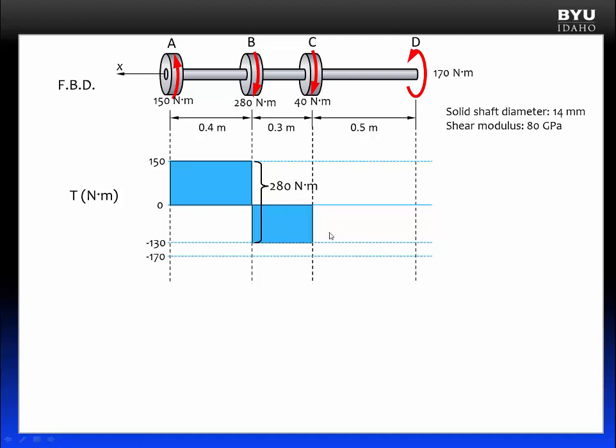At point C, we see a further drop, 40 newton meters to minus 170 newton meters, and we remain at minus 170 newton meters to the support at D, where we see a positive 170 newton meter torque at D returns us back to zero. That gives us confidence that our internal torque diagram is correct.